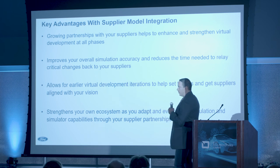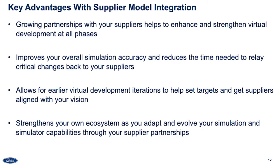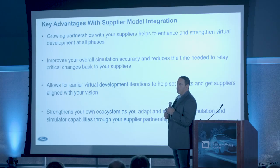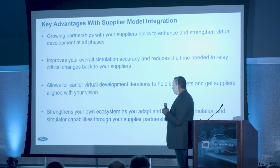Having that communication is going to be key, and trying to bring them in as part of your ecosystem forces that conversation. It improves your overall accuracy — the more you can bring in their models and work together, your end product is going to be more accurate. It allows for earlier development. Now that you have your system set up, you can start developing vehicles months and years ahead of what you might be able to if you have to wait for physical interaction or for a supplier to bring something to the table. And it strengthens your own ecosystem — the stronger and more consistent your company becomes around developing all of your tools that interact and work together, you're going to be that much faster and it's going to be easier to bring in suppliers.